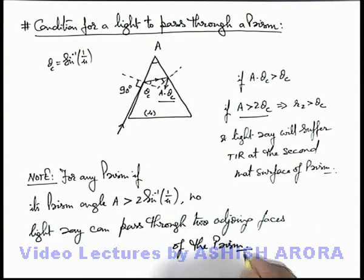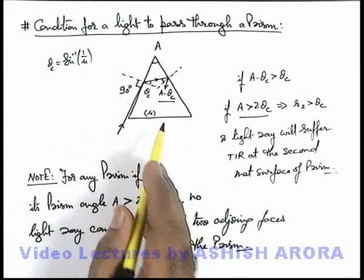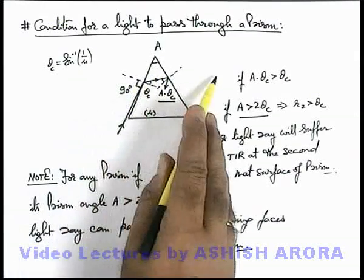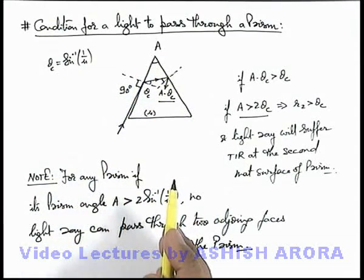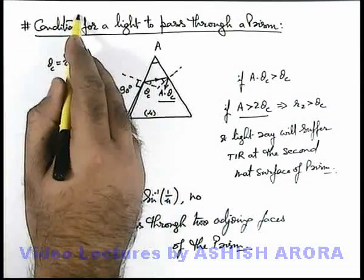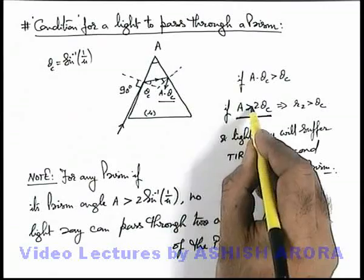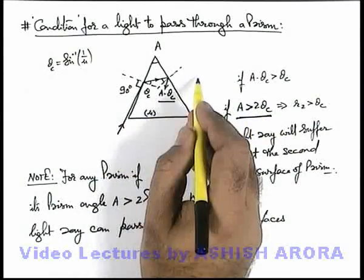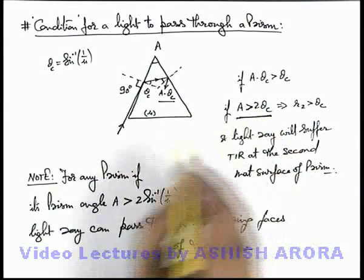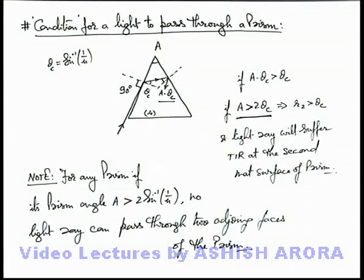So always remember, whenever the prism angle is more than twice the critical angle, light ray will never pass through two adjoining faces of the prism. That is the condition for light to pass through the prism: A should be less than 2 theta c for light to pass, or if A is more than 2 theta c, light will never pass through the adjoining faces.